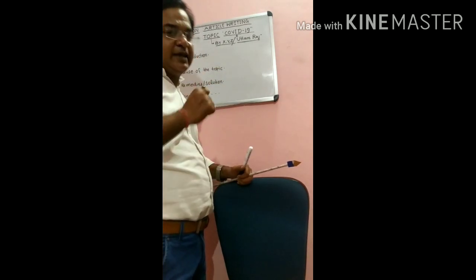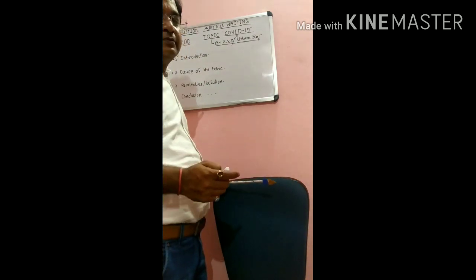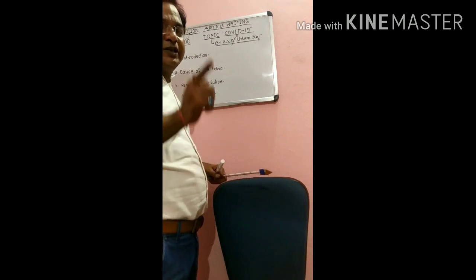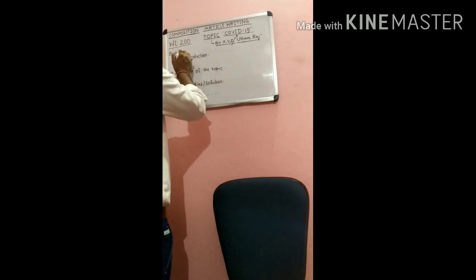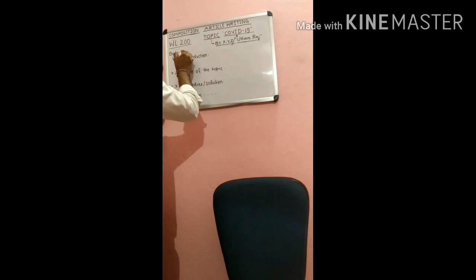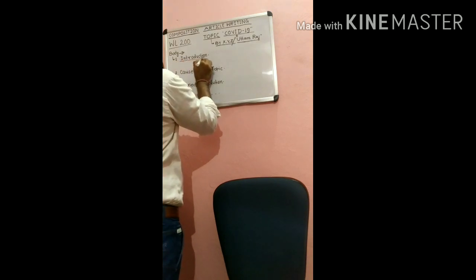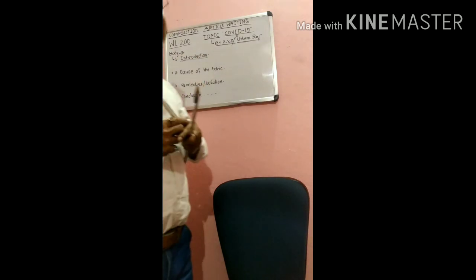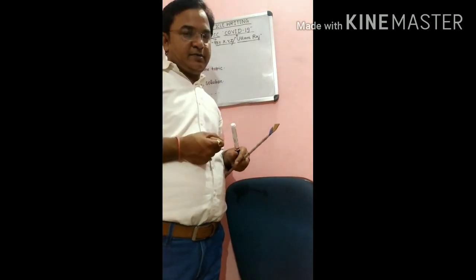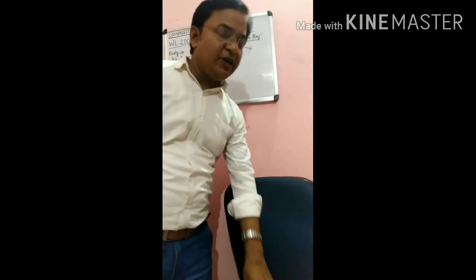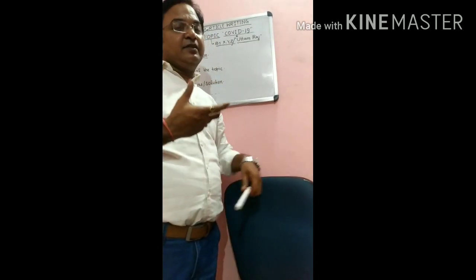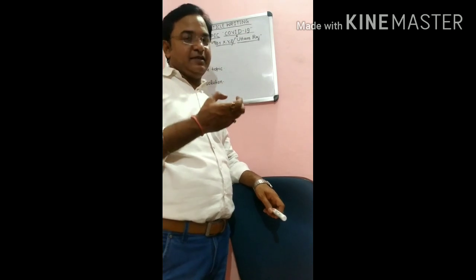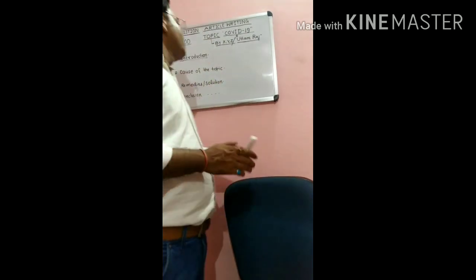Now the body starts. Before starting the body, leave one line — this arrow sign represents that you have left the space of one line. Then write down the introduction. In the introduction part, you have to introduce your topic: for what purpose that particular event or thing has happened, what is that particular thing — you just introduce it.